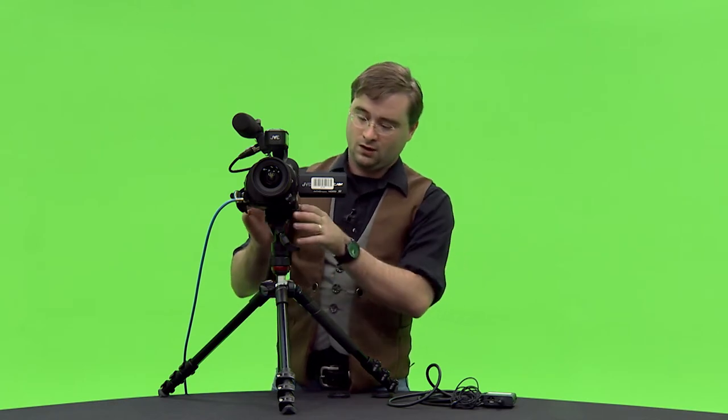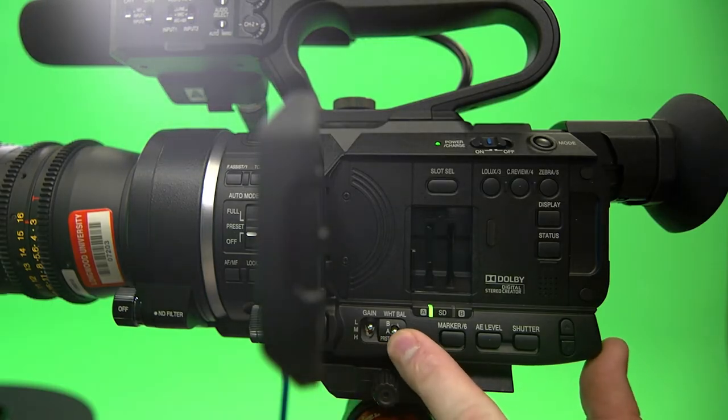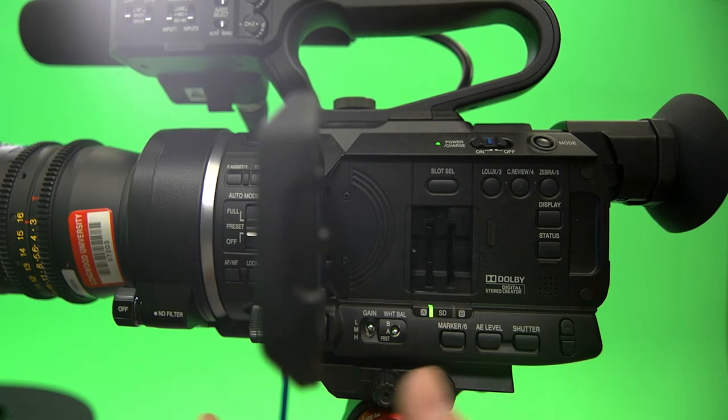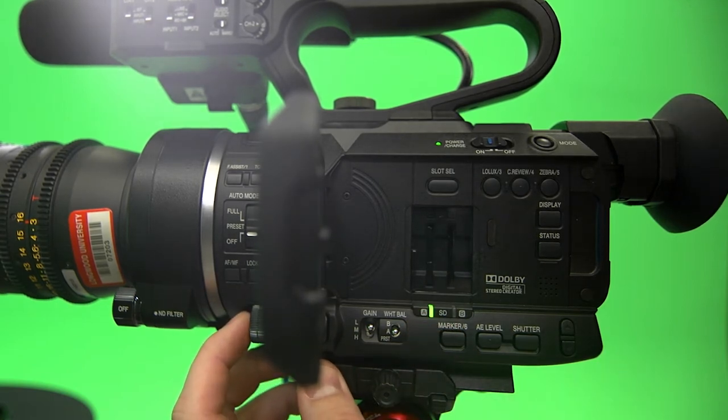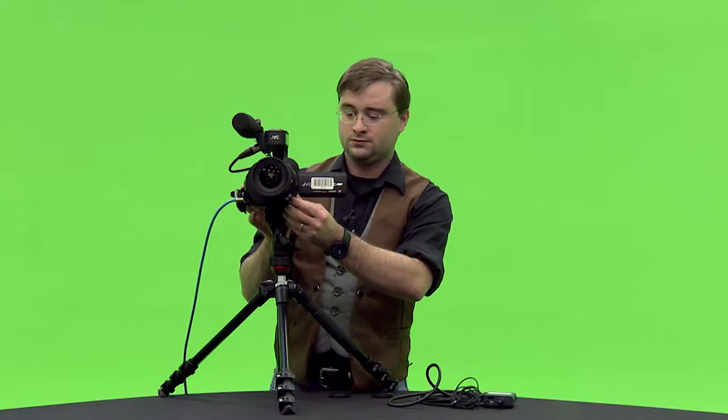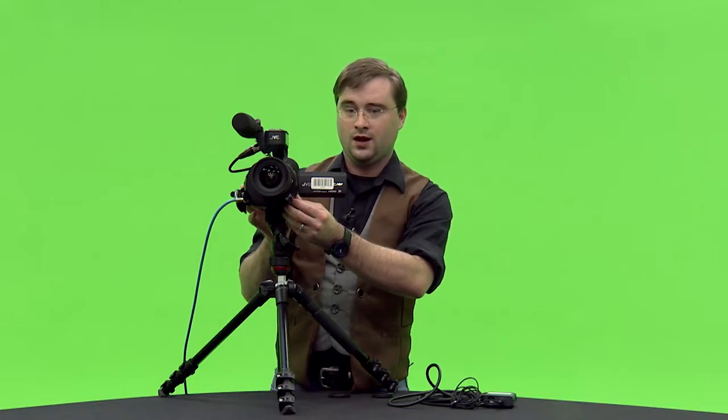First thing you'll want to do is white balance your camera. To do that place a white card in front of the camera. Make sure that your white balance switch is located in either the A or B position. With the white filling the entire lens hit the white balance button on the front of the camera here and your camera will adjust itself to that version of white.